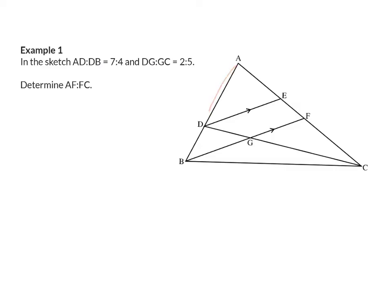In the sketch, AD/DB has the ratio of 7 to 4, and DG/GC has the ratio of 2 to 5. We are asked to determine the ratio of AF to FC. For the proportionality theorem to work, the whole side AC has to form part of a triangle where point F is used to draw a line parallel to one of the sides of that triangle, and here that is not possible. So here, there will be a bit more manipulation needed to calculate this ratio.